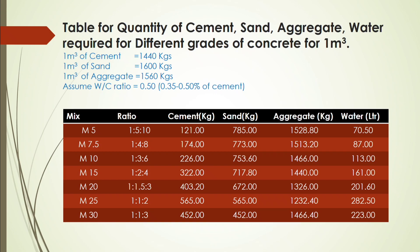In the quantity table, the weight of one cubic meter of cement is 1,440 kg, one cubic meter of sand is 1,600 kg, and one cubic meter of aggregate is 1,560 kg. The water-cement ratio is assumed at 50% of the cement weight.